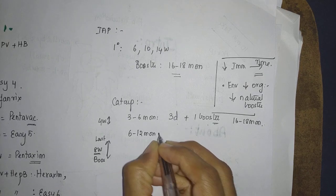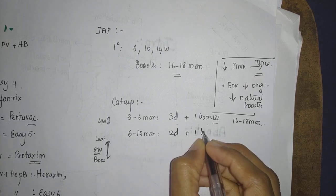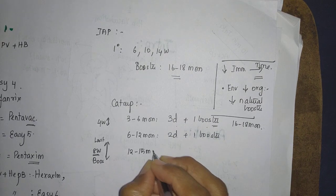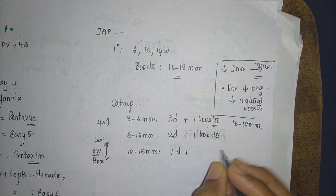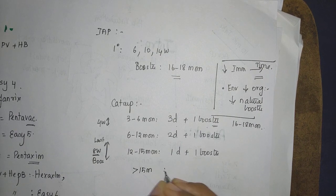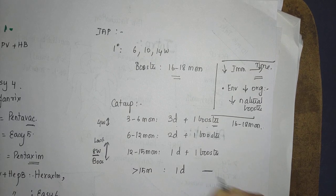6 to 12 months age group: 2 doses plus booster. 12 to 15 months: 1 dose plus 1 booster. More than 15 months: just 1 dose. No need for a booster.